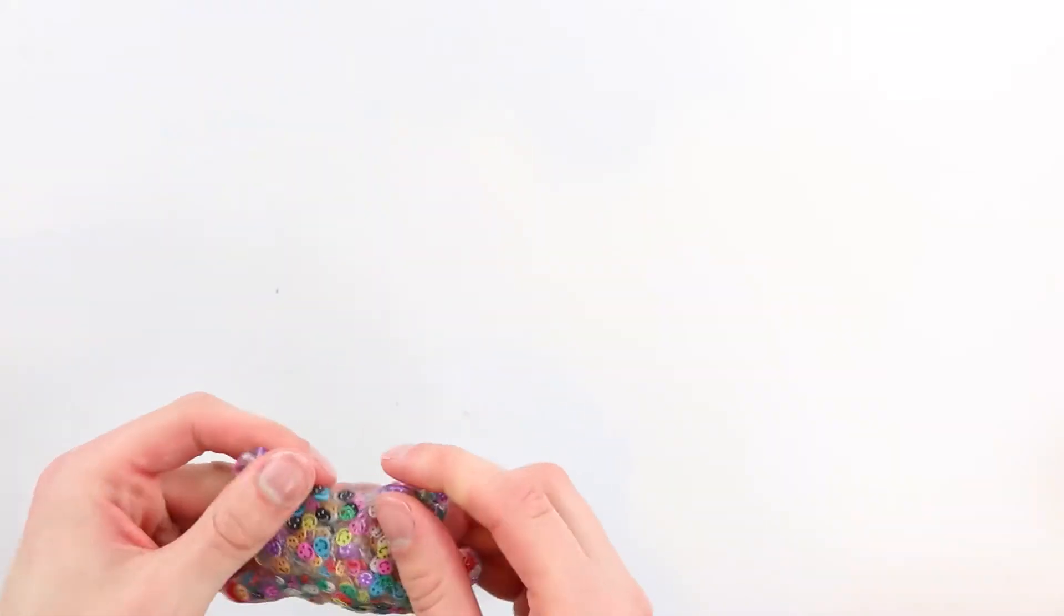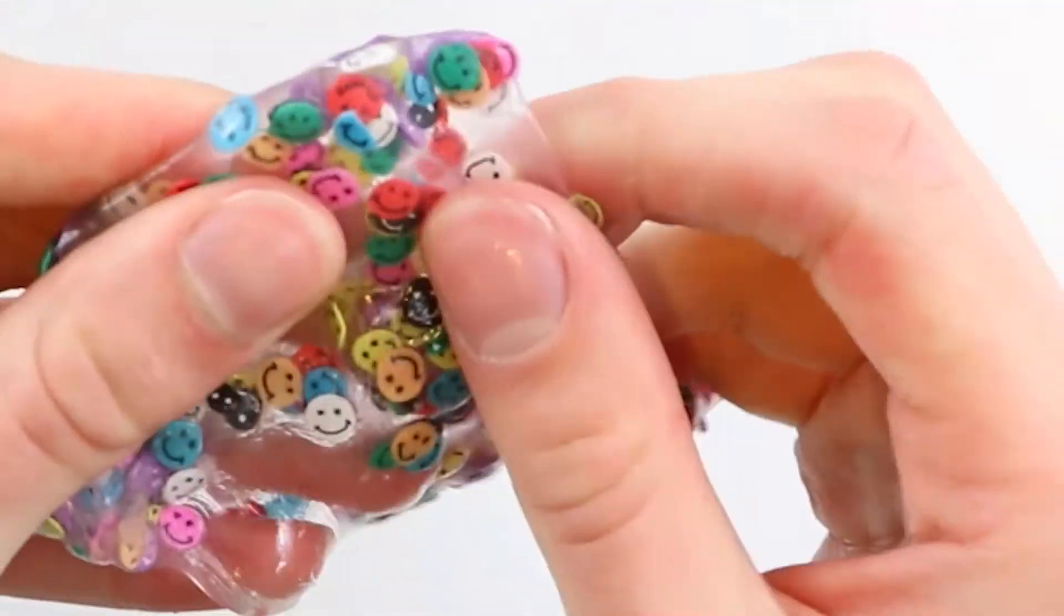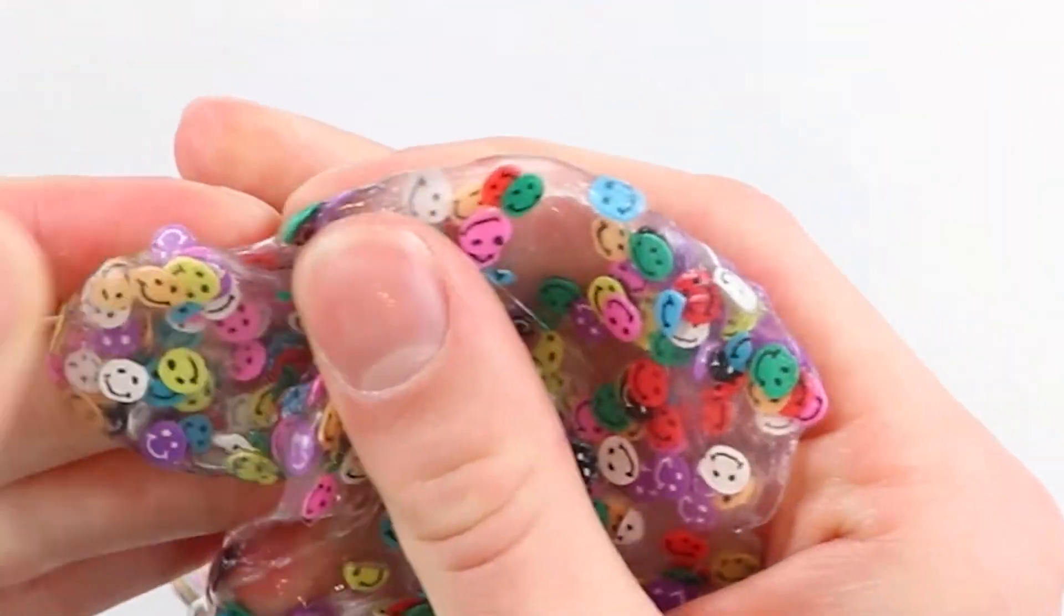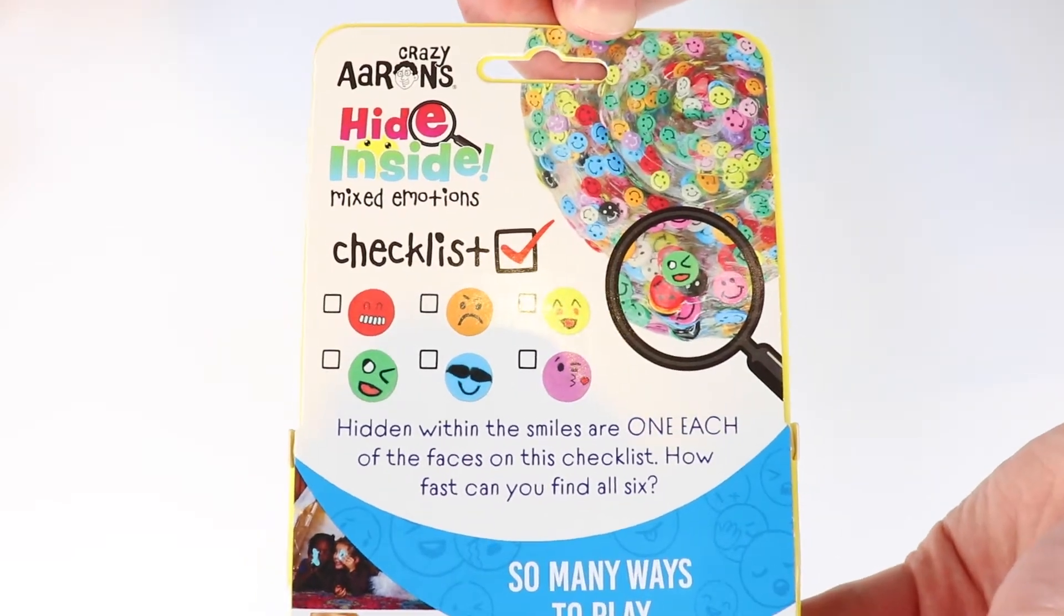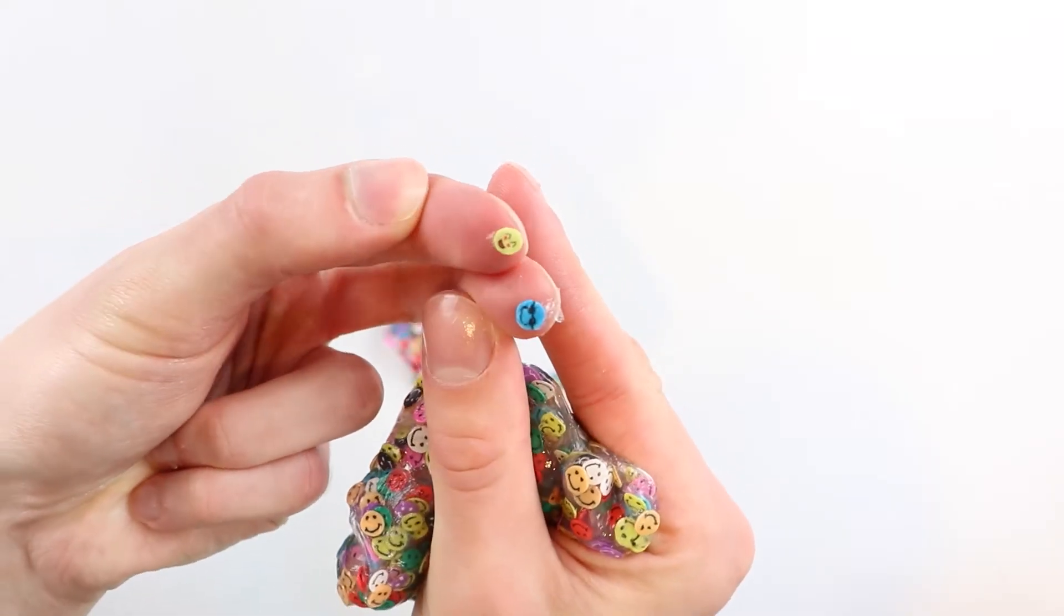The one we're playing with today is called Mixed Emotions. As you can see, there are lots of little tiny smiley faces hidden all throughout. Can you find any other emotions in there? There are only six of them.